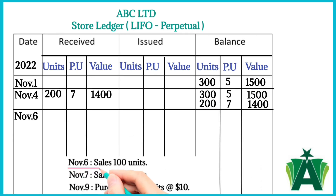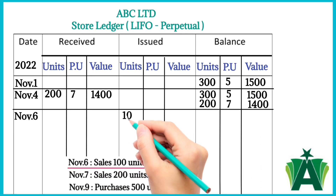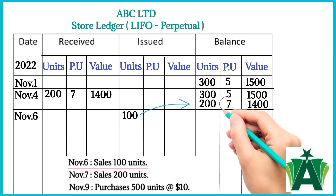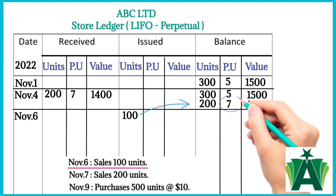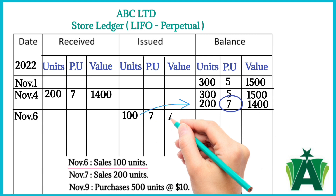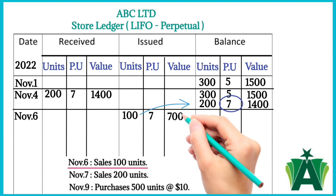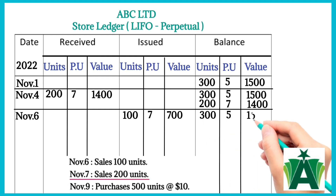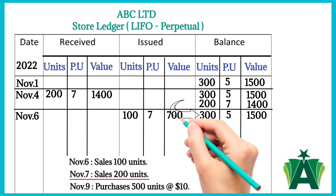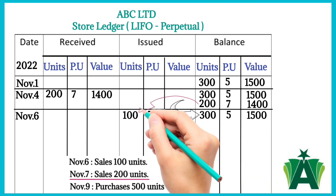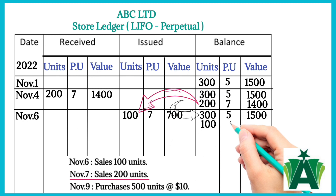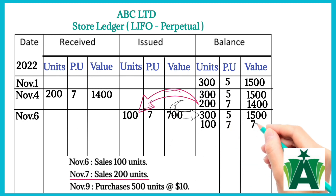November 6th: sales of 100 units. Under the LIFO method, 100 units will be issued out of the 200 most recently purchased, because LIFO assumes that the most recently purchased items are the first ones sold. We take the current price of $7 per unit and the total value is $700. In the balance column, 300 units remain at $5 per unit totaling $1,500, and the remaining 100 units from the November 4th purchase are recorded at $7 per unit totaling $700.